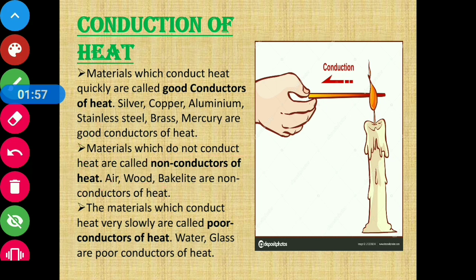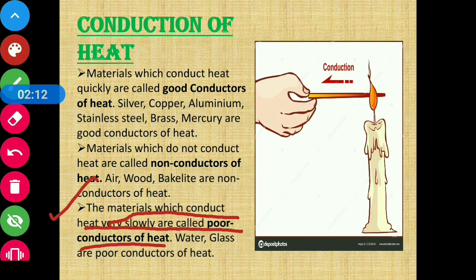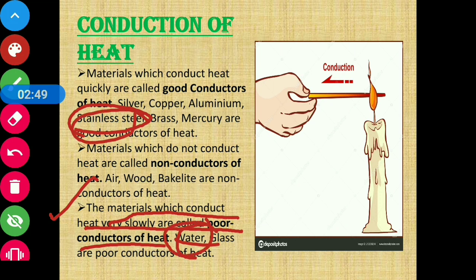Materials which conduct heat very slowly are called poor conductors of heat. For example, water. When we heat water in utensils, the utensils become warm first, and then the water gets heated up. This shows that stainless steel is a good conductor of heat, whereas water is a poor conductor of heat.